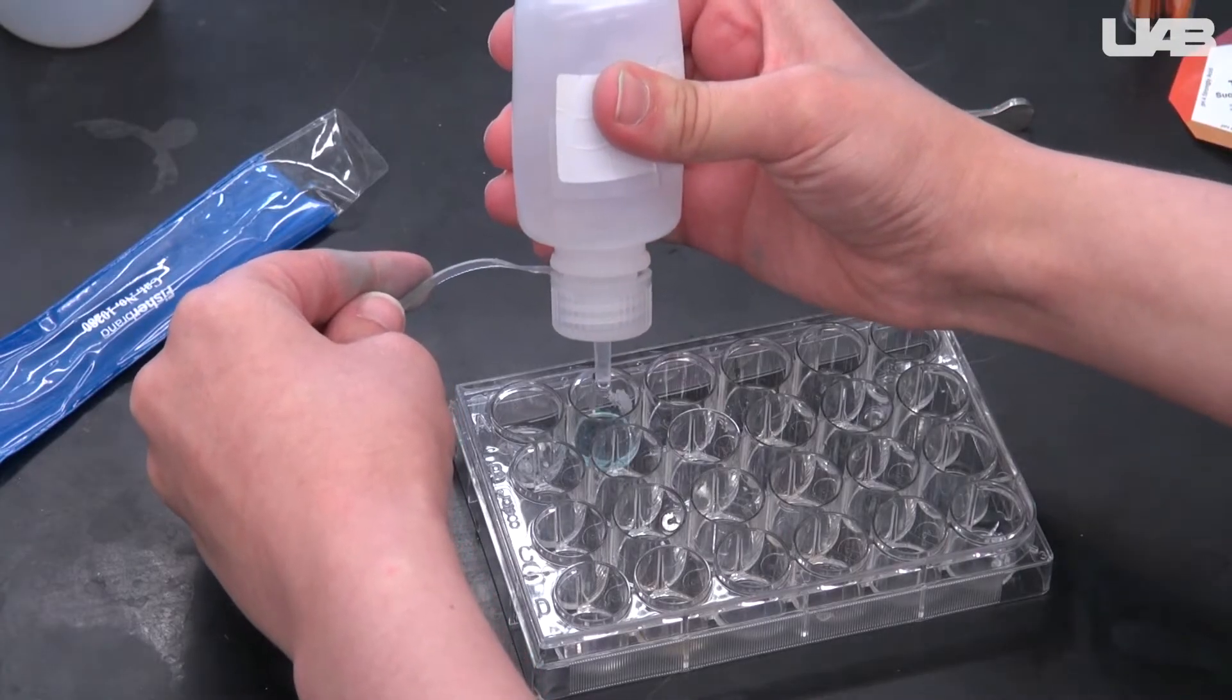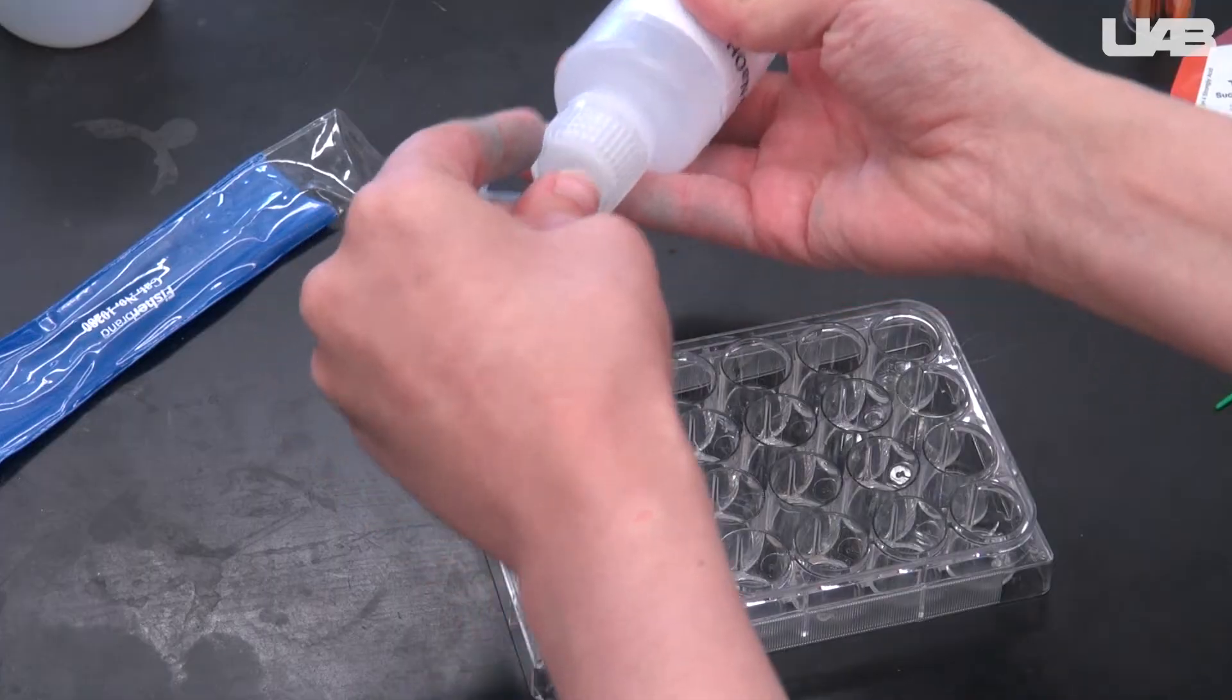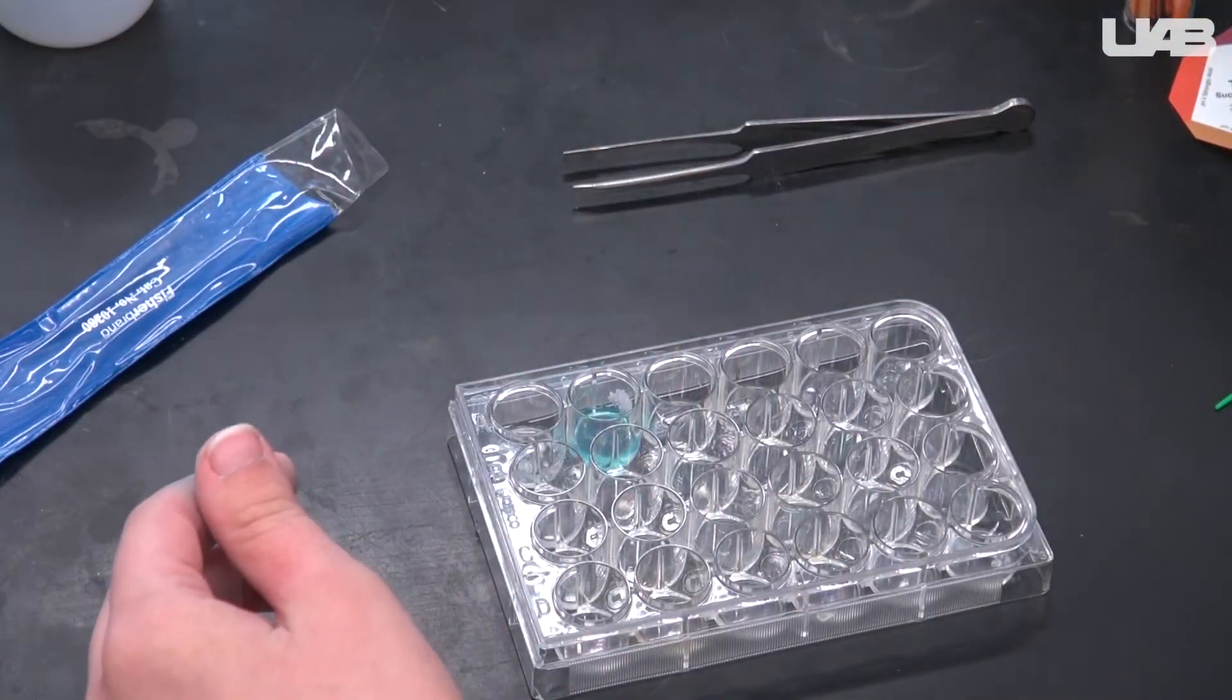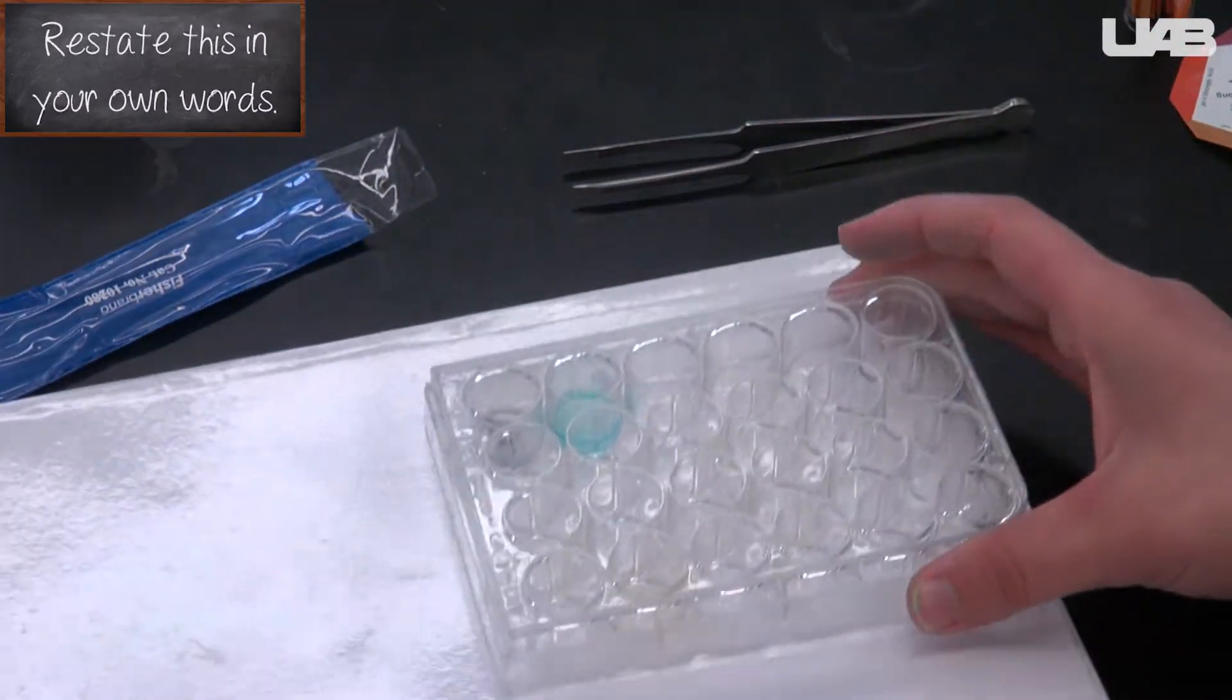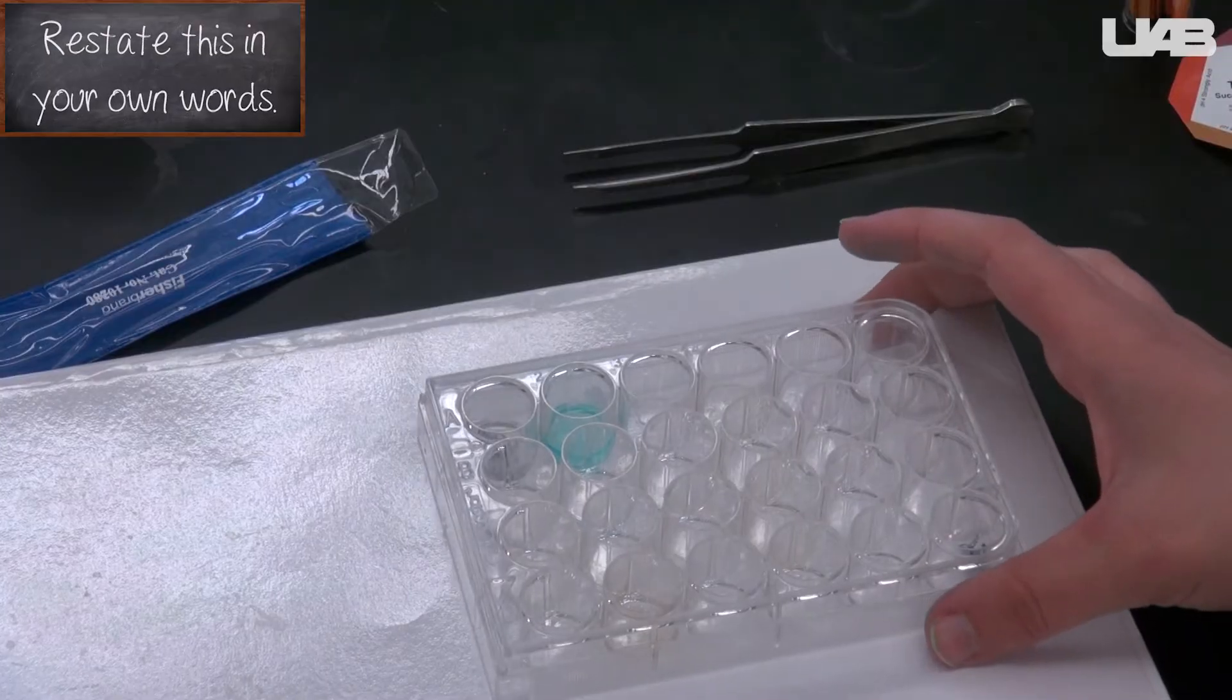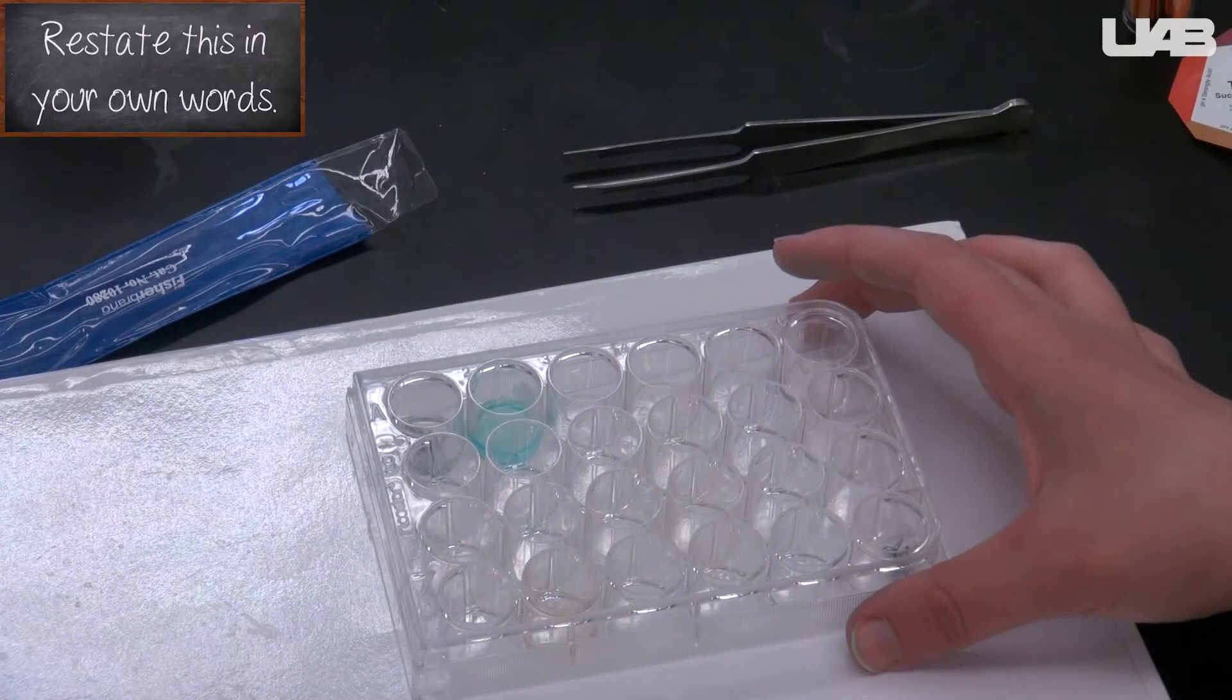Sometimes the bubbles or precipitate particles are small and hard to see, especially against the black background of your lab bench. If you move the well plate to a blank white page of your notebook, you may have an easier time seeing your results.